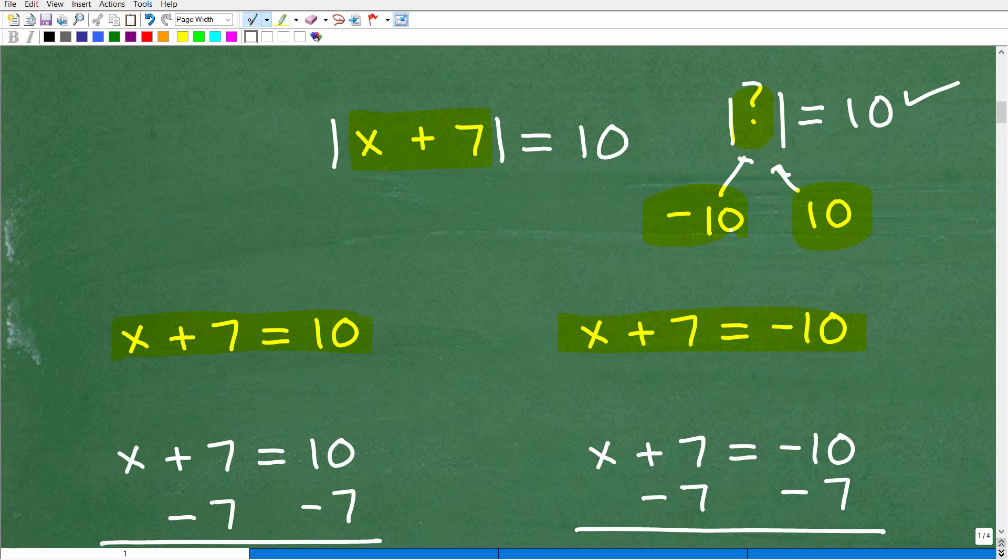Now there are other more interesting absolute value equations that you're going to have to practice. For example, let me just show you. If I had 2 absolute value of x minus 1 plus 3 is equal to 9, there's a few things here you have to do before you do this part of the problem. You have to isolate this absolute value function part right there. So it's kind of like solving an equation for this. I have additional videos on absolute value equations in my YouTube videos.